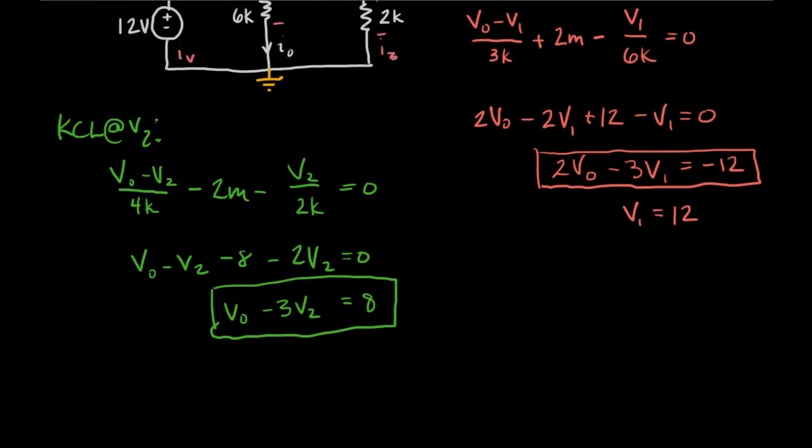And in this situation, we get V0 equals 12. So 8 minus 12 is going to give us minus 4. And so we'll get 4 thirds for V2. And so now we've solved all of the branch voltages.